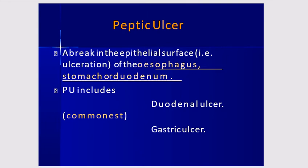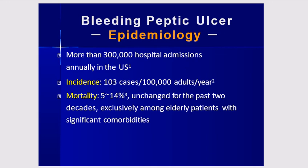Peptic ulcer occurs when there is a break in the epithelial surface — ulceration of the esophagus, stomach, or duodenum — in areas exposed to pepsin flow. Peptic ulcer includes duodenal ulcer and gastric ulcer. It causes more than 300,000 hospital admissions annually in the United States, with an incidence of 103 cases per 100,000 adults per year. Mortality of 5 to 14% is unchanged over the last two decades and occurs predominantly in elderly patients with significant comorbidities.